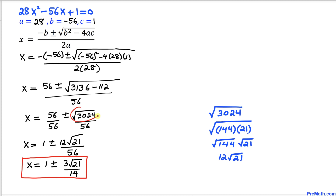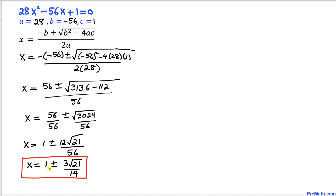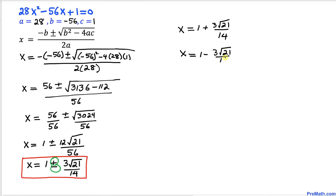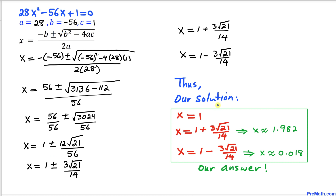Factoring √3024, we find it simplifies to 12√21. Therefore our simplified answer is x equals (56 ± 12√21) / 56, which reduces to x equals 1 ± (3√21) / 14. Splitting the plus and minus: x equals (1 + 3√21) / 14 and x equals (1 − 3√21) / 14.